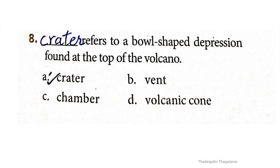Eighth one: dash refers to a bowl-shaped depression found at the top of the volcano. The correct answer is option A: Crater. Crater refers to a bowl-shaped depression found at the top of the volcano.